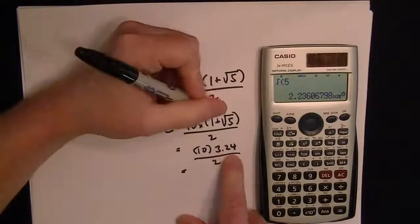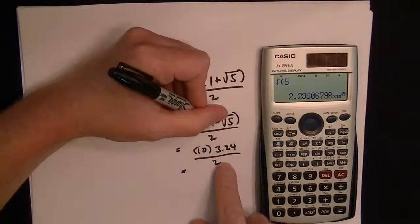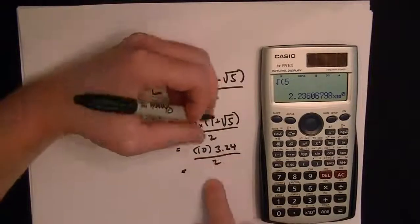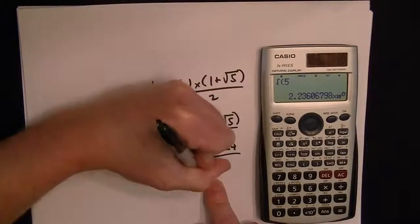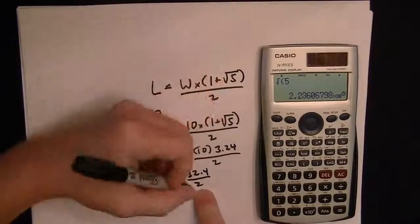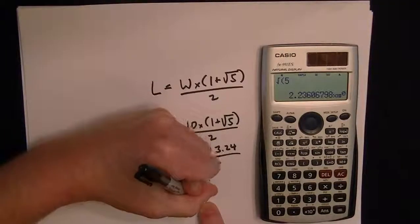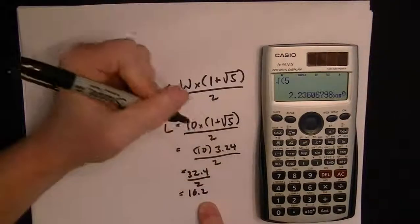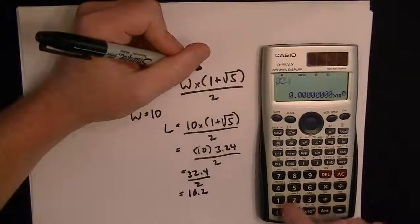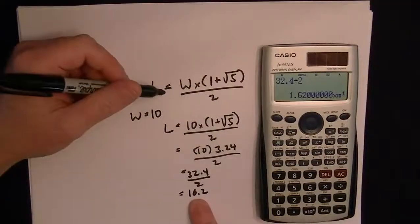So, well 3.24, so I added the 1 here first to the 2.24 plus 1 is 3.24. Then I multiply through by 10 and I get 32.4 divided by 2, and so that's going to give me 16.2. So if you just make sure 32.4 divided by 2, 16.2. So that's how you do that.